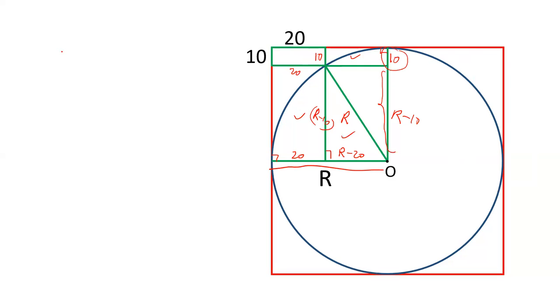This is a right angle triangle. In a right triangle we can apply Pythagoras theorem. H squared equals P squared plus B squared. H is R, perpendicular is R minus 10, and this is R minus 20.